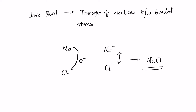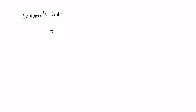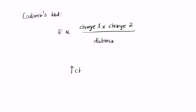Ionic bonds use the same characteristics as Coulomb's law. Coulomb's law states that the force — or energy — between two charges is proportional to the product of the charges (charge₁ × charge₂) divided by distance. The higher the charge, the higher the energy; the lower the distance, the higher the energy. This creates stronger bonds in ionic compounds because the electrostatic energy is much stronger than other types of energy.